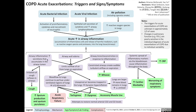First, airway inflammation results in an increase in secretions that accumulate in the airway lumen. This irritates the cough reflexes in the airways, triggering cough. This also results in increased sputum production and sputum purulence.